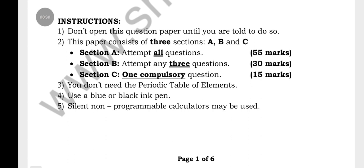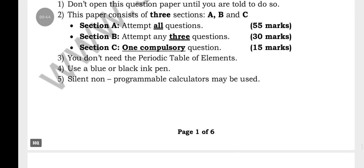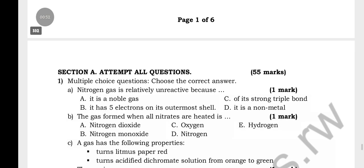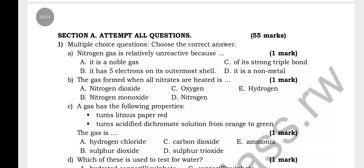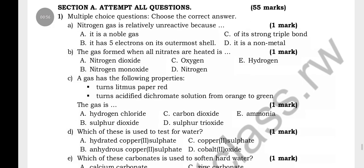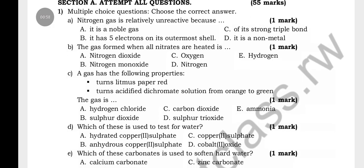Here we have instructions you have to read through. This copy comprises three sections: Section A, do all; Section B, attempt three; and Section C comprises a compulsory question. Don't open the question paper until you are told to do so. You will need the periodic table of elements and use blue or black ink pen. Silent and programmable calculators may be used.